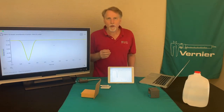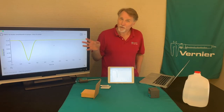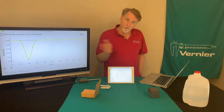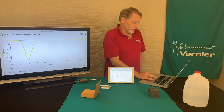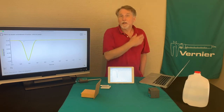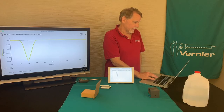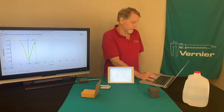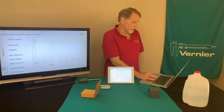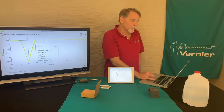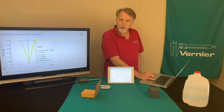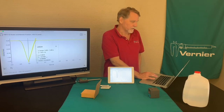For this part of the experiment you need to find the average acceleration of the block as it slows down. You don't want the part where you're giving it the push — you want the part after you've let go of the block. To get the acceleration, highlight that region of the graph when it's slowing down, then do a curve fit and apply a linear fit. The slope of that line gives the acceleration of the block.